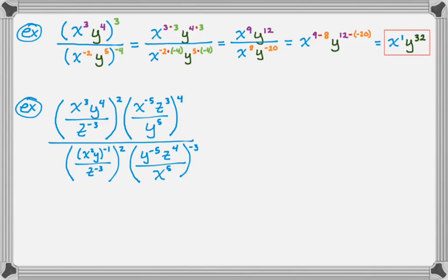This one's a little bigger — we have a lot of quotients to a lot of powers, and then overall it's also a quotient. I'm going to work on the numerator first. In the numerator: x cubed to the second — power to a power — that's x to the sixth. Then y to the fourth to the second — that's y to the eighth. Then z to the negative three to the second is z to the negative six, but it's in a denominator, so I'm going to bring it up as z to the positive six.